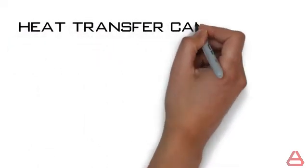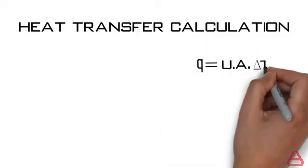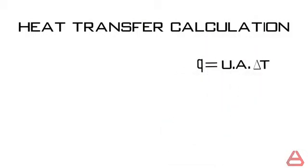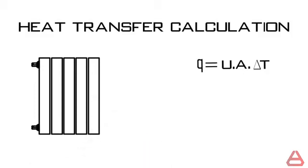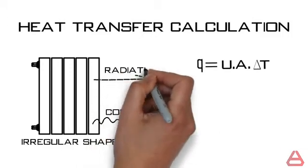Usually, in order to calculate heat transfer values, we use equations like Q is equal to U dot A dot delta T. But in our case, since radiators have an irregular shape and use multiple means of heat transfer, mainly convection and radiation,